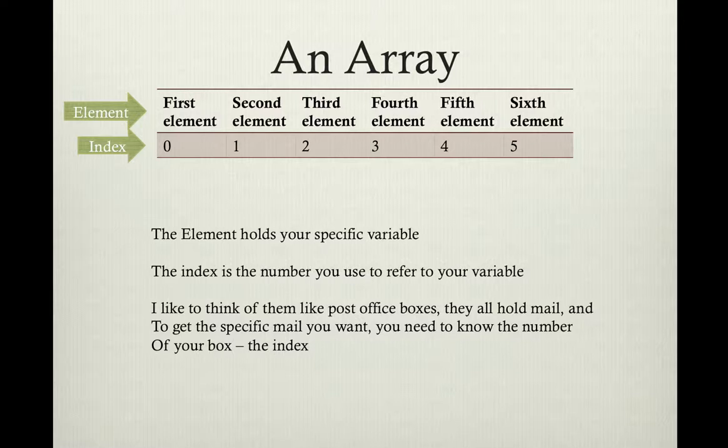An array is like that. You can have a very large set of variables. We're typically working with small ones in Alice, but it can be very large. You typically will declare how big your array is going to be before you ever start using it — again, like your post office. They can't suddenly create more post office boxes just because they have a new client. The element is what you have inside of your array — that's your variable. The number on the box is your index.